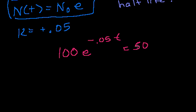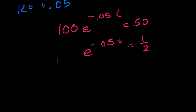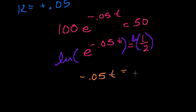We just solve for t. Divide both sides by 100. You get e to the minus 0.05t is equal to 1 half. Take the natural log of both sides. And then you get the natural log of e to anything, it's just the anything. So it is minus 0.05t is equal to the natural log of 1 half.